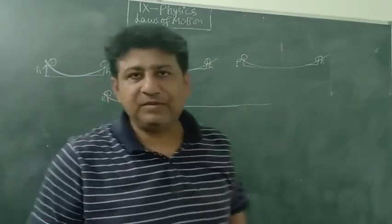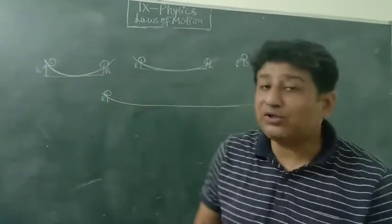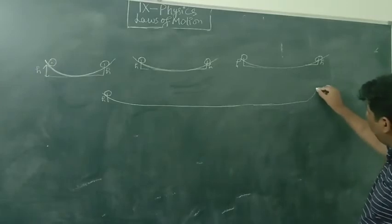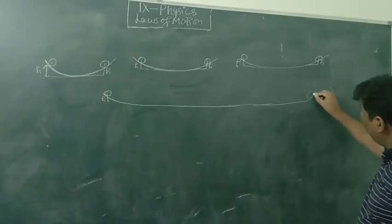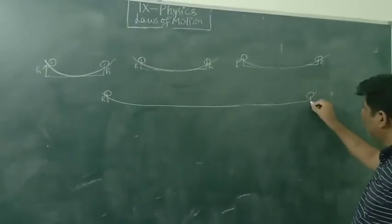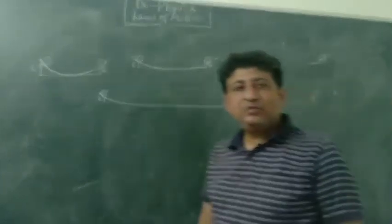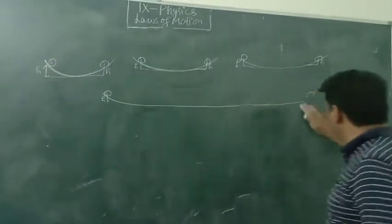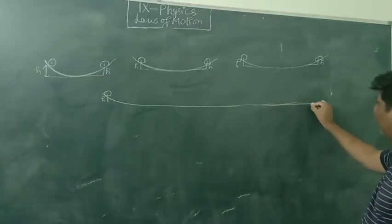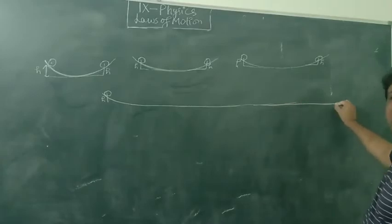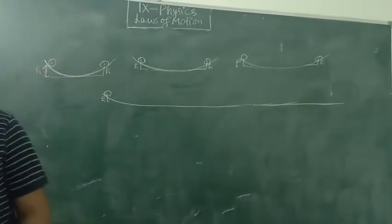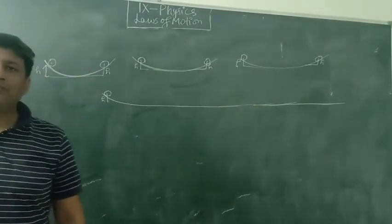If there is no wall to stop the ball, it would not stop until it reaches the same height. If the surface is completely flat and frictionless, the ball would travel and travel indefinitely.